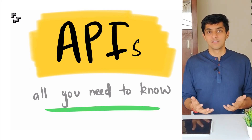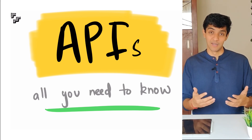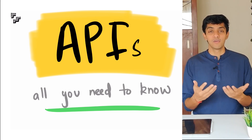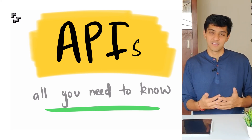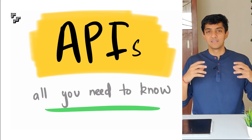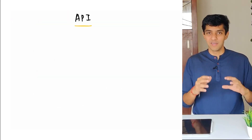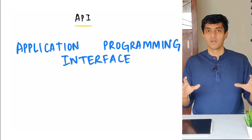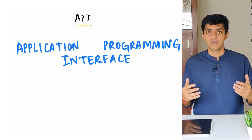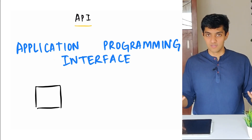But my guess is that if you're watching this particular video, then you're not from a computer science background, you're not from a tech background, and you don't know what an API is. Possibly you've heard about it, but it's very confusing to you. So let's begin with a basic definition of what an API is. An API essentially stands for Application Programming Interface. In a very simple sense, in order for two systems to communicate with each other,